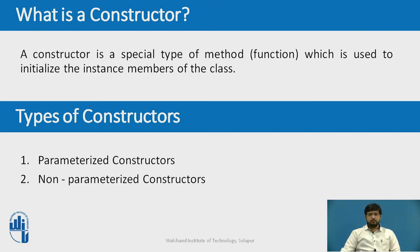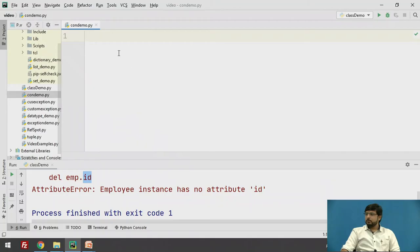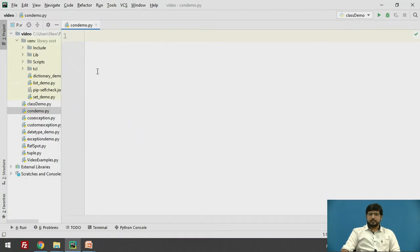It accepts the self keyword as a first argument, which allows accessing the attributes or methods of the class. We can pass any number of arguments at the time of creating the class object depending on the constructor definition. It is mostly used to initialize the class attributes. Every class must have a constructor, even if it simply relies on the default constructor.